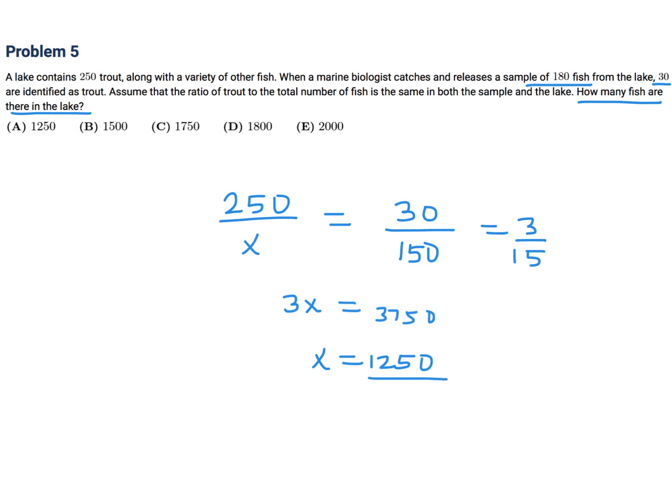So total would be this 1250, which is the other fish. And then the 250, which is the trout, according to that first sentence right there. So this total is what they're asking for. And that total, of course, is 1500. And therefore, number five would be B.